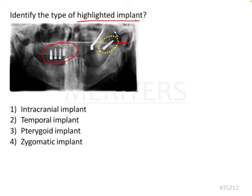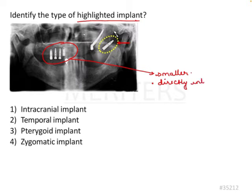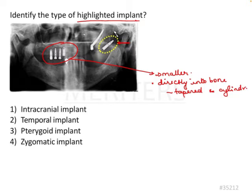First let's have a look at these smaller implants. They are directly into bone — two of them are tapered and two of them are cylindrical. These are basically nothing but our conventional endosseous implants. This is how they look on the OPG.